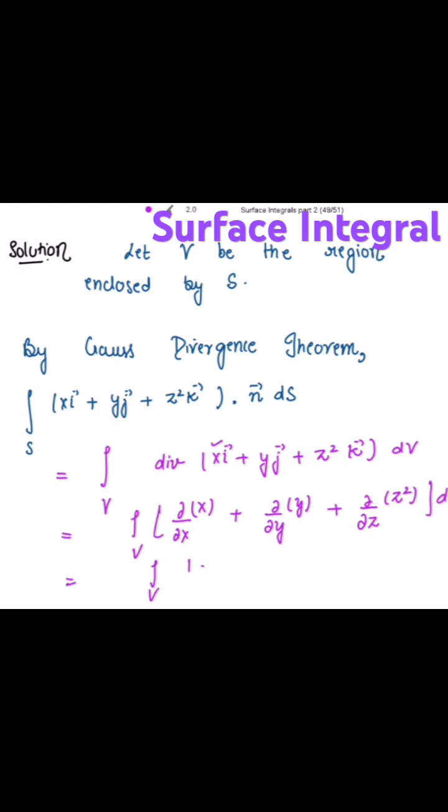So, the first term gives 1, plus the second term is also 1, plus third term is 2z, which can be written as 1 plus 1 plus 2z, that is 2 plus 2z.